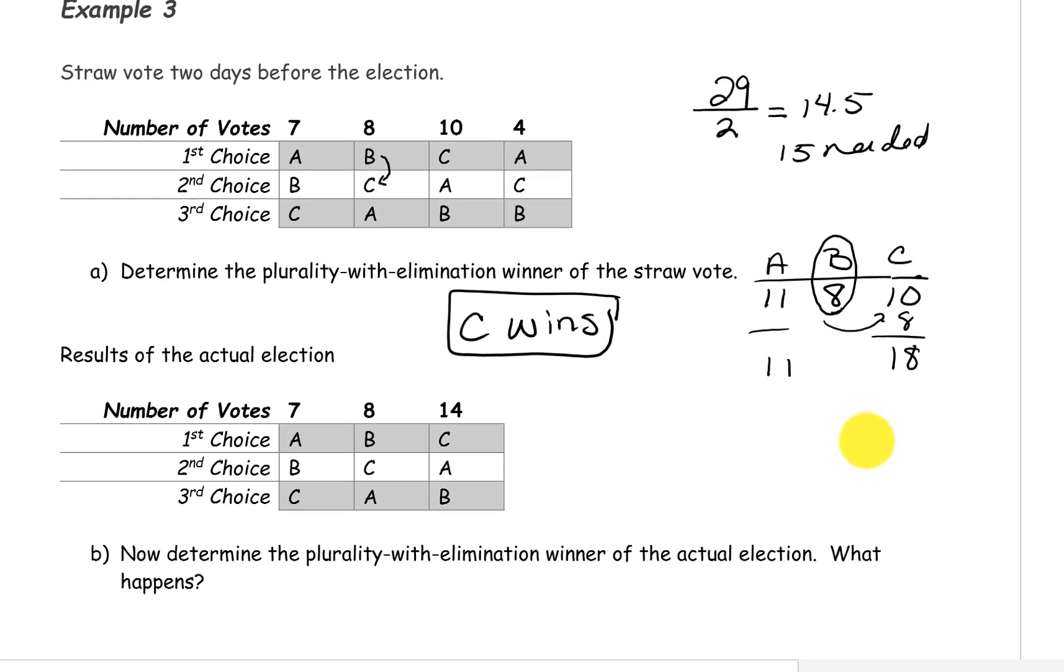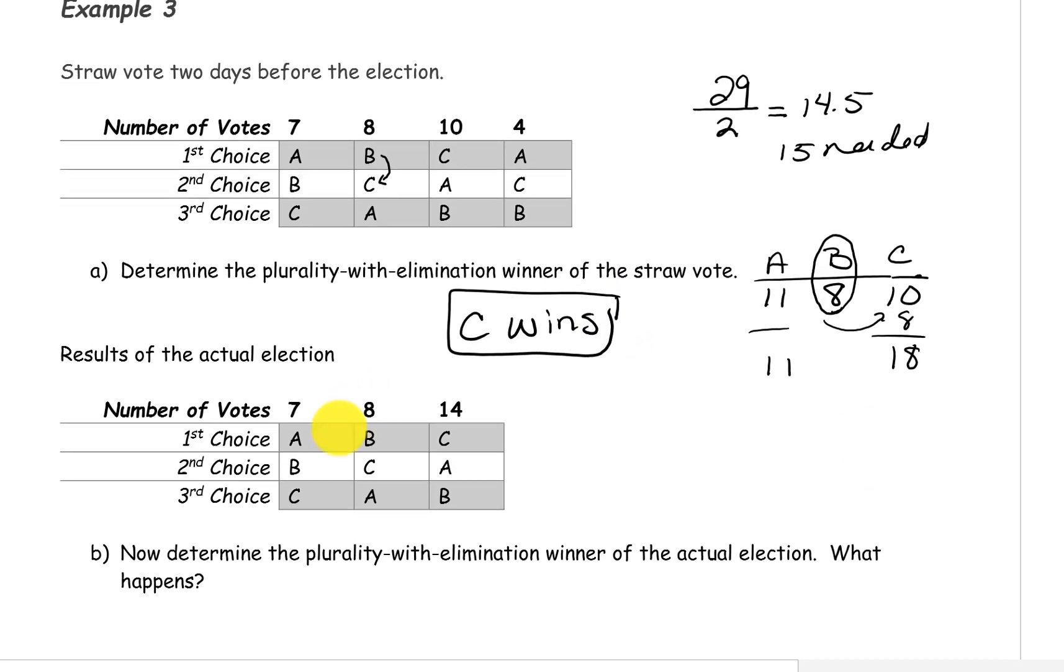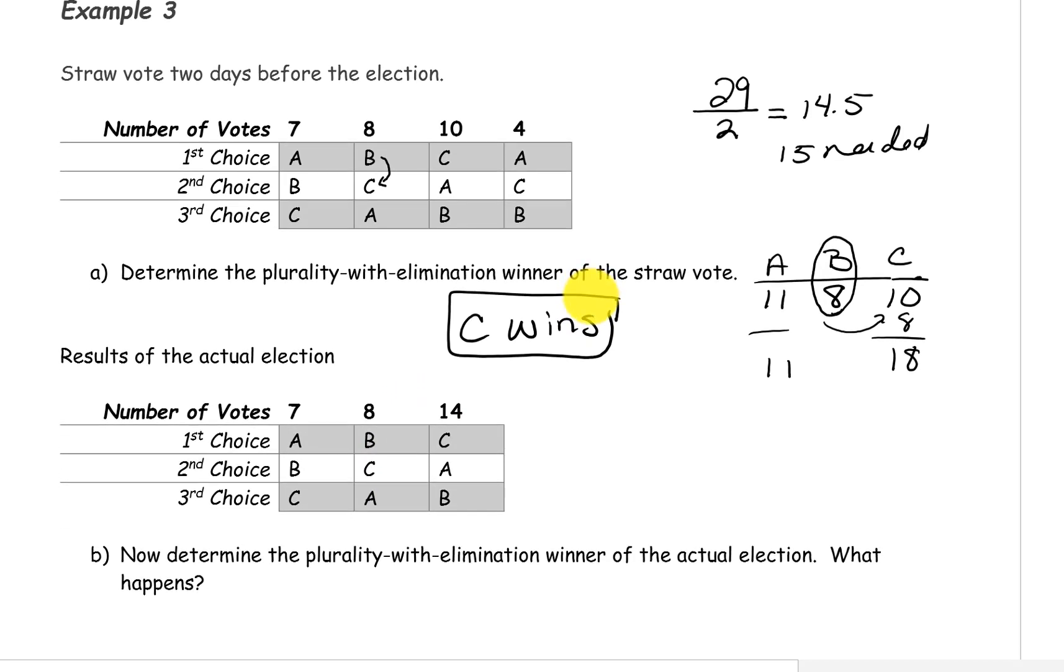Now let's take a look at the preference schedule for the actual election. We notice that there is a little bit of difference between this preference schedule and the one from the straw votes two days before. The difference is that we have 14 voters in the new preference schedule with the preference C, A, B.